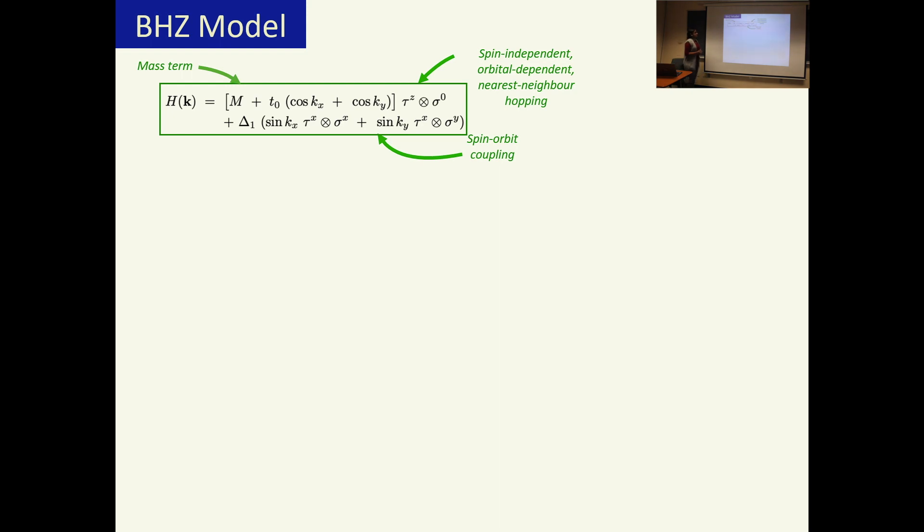Let me start with a crash course on the BHZ model. The BHZ model consists of three terms. The first term is the mass term which gives the energy gap between the two bands. The second term is the spin independent but orbital dependent nearest neighbor hopping, while the third term is the spin independent coupling.